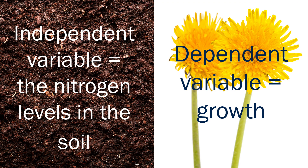In our dandelion example, the independent variable is the type of soil — one is nitrogen-poor, the other is nitrogen-rich. The dependent variable is what we measure as the effect of the two types of soil: the growth observed in my yard.